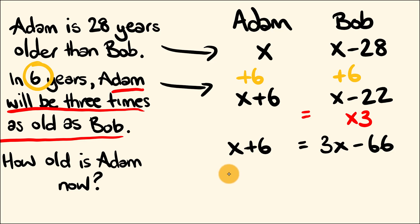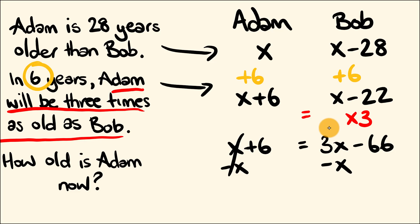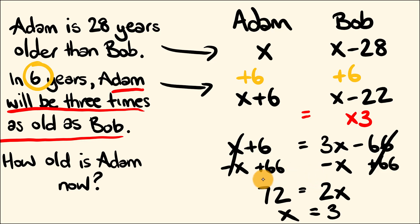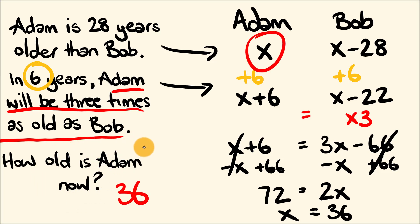Now we just solve the algebraic equation. Let's get all the x's on one side by subtracting x from both sides: x minus x cancels, and 3x minus x equals 2x. Then add 66 to both sides: the negative 66 cancels, leaving 66 plus 6 equals 72. So 2x equals 72, meaning x equals 72 divided by 2, which equals 36. That's how old Adam is right now — Adam is 36 years old.